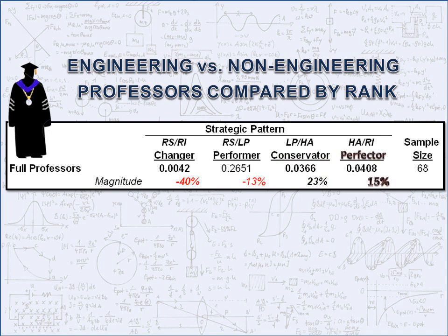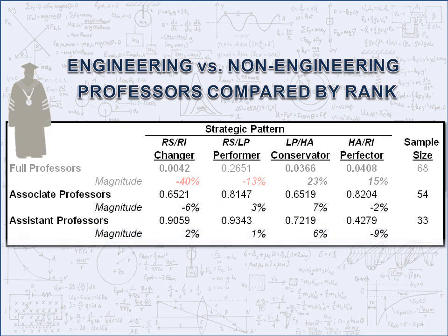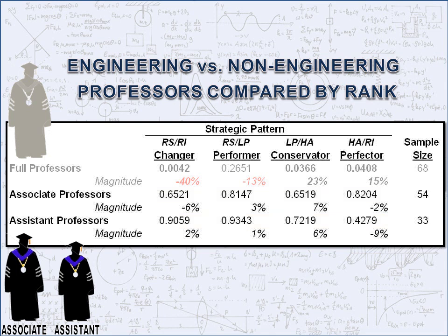When new ideas are considered, risk is minimized using analysis to search for certainty and optimal results. Professors in the assistant and associate ranks are a different breed — they are virtually indistinguishable from their non-engineering peers. None of the differences even approach academic significance levels, and the magnitude of the differences with non-engineering areas are more wiggles than differences.